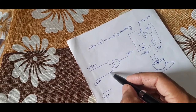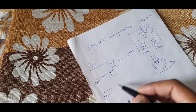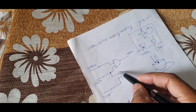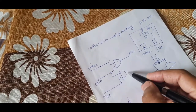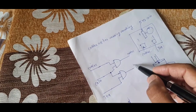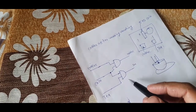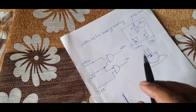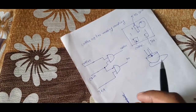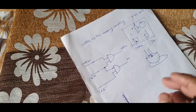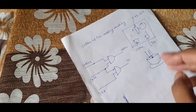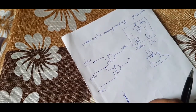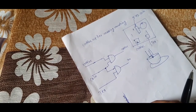In the same way, if the coin is entered and the tea button is pressed, we use another AND gate and tea will be dispensed. So two AND gates are used — one for coffee and one for tea.